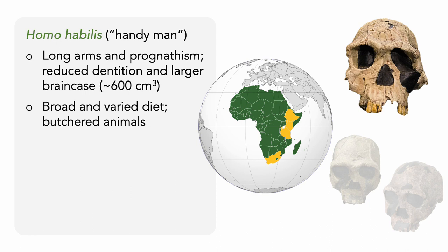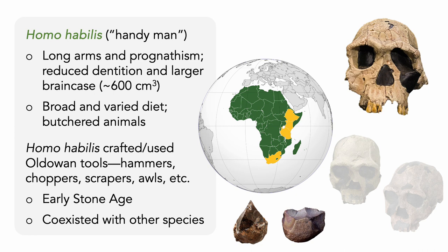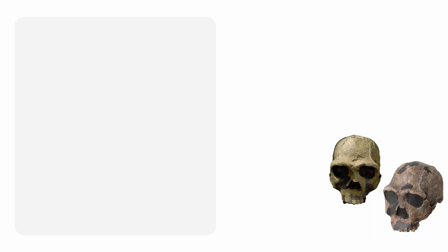Homo habilis had a broad and varied diet and regularly scavenged meat from animals killed by predators — marks on animal bones provide evidence of skinning and removing meat. To carry out this and other work, Homo habilis crafted Oldowan tools including hammers, choppers, scrapers, and awls. This was the early stone age, with several hominin species living in coexistence, including Paranthropus boisei, Homo rudolfensis, and Homo erectus. So although this technology is largely associated with habilis, an earlier form was also used by early Homo and even Paranthropus, and Homo erectus would continue this tradition before replacing it with a more advanced toolmaking industry.